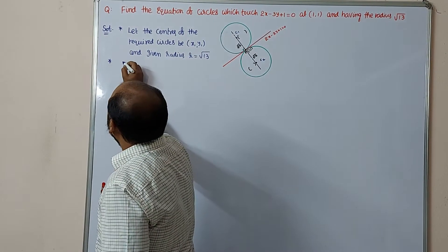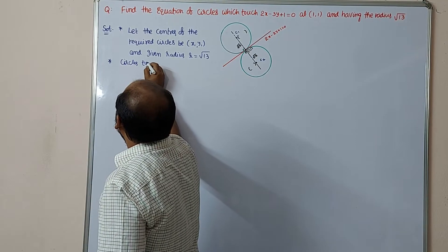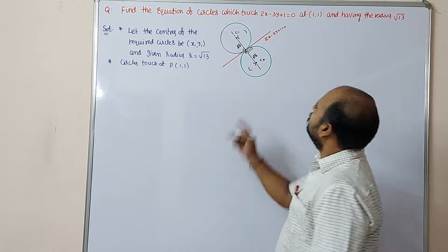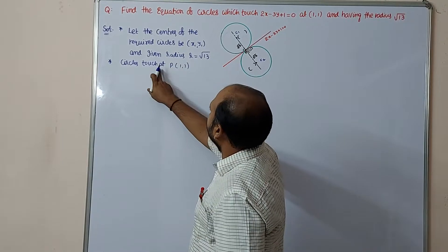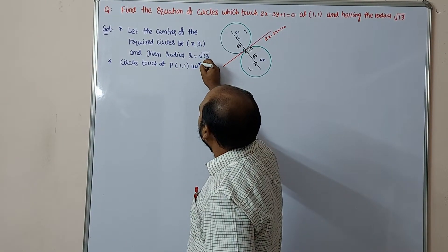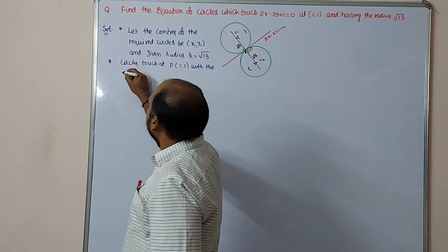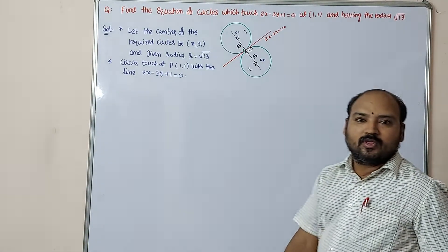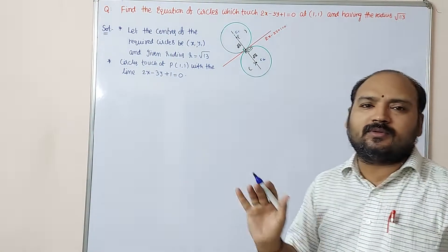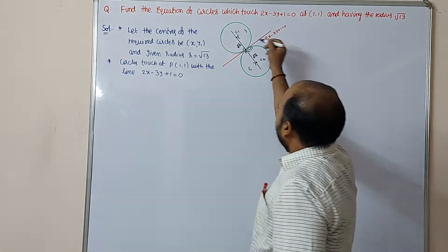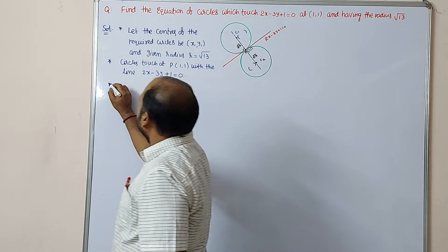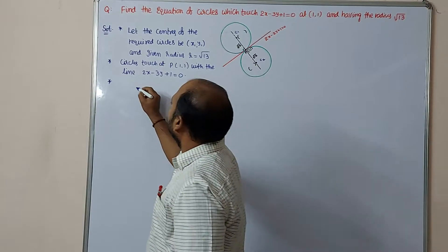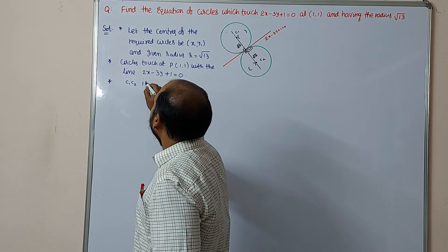Step two: the circles touch at point P(1,1) with the line 2x minus 3y plus 1 equal to 0. From this information, the line of centers C1C2 is perpendicular to the given line. We can calculate the perpendicular line to find the equation of C1C2.